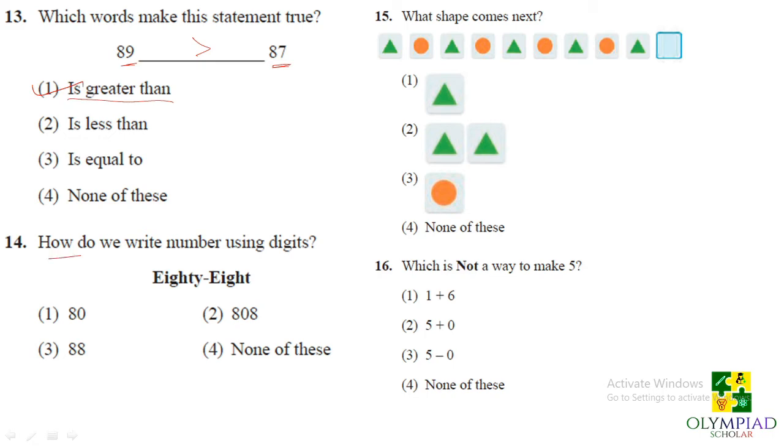How do we write the numbers using digits? 88. We have to write 88. It is very simple. You have to write 88 as you say it. So option 3 is correct.